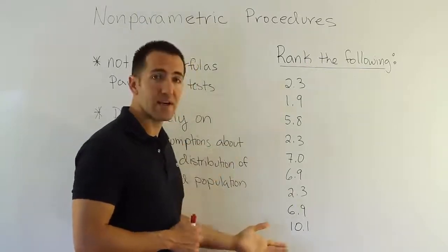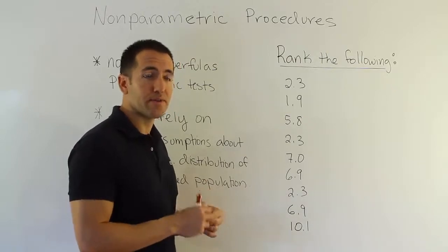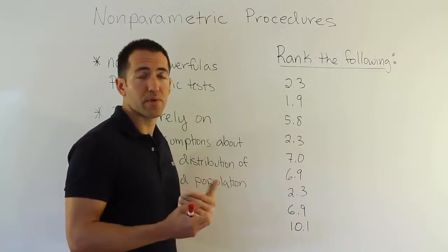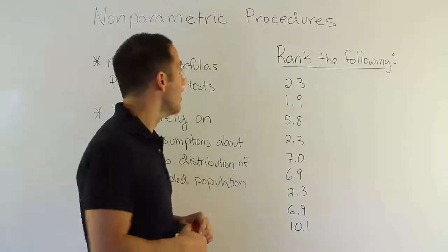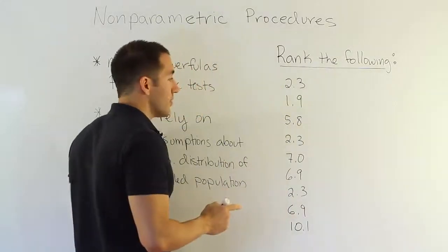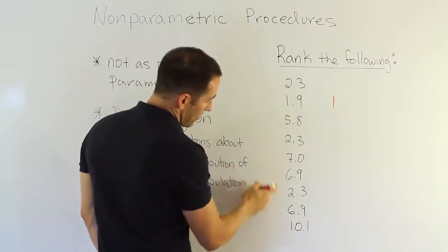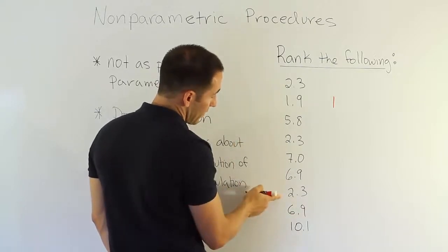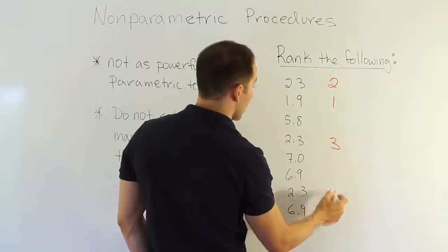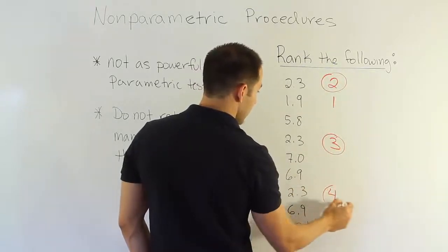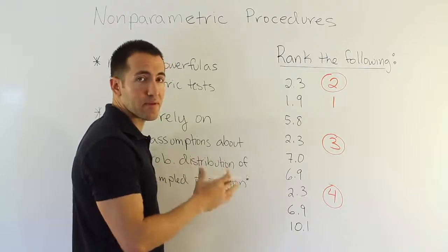Let's do this problem. Initially go through the data and rank it, putting the smallest number as one, the next as two. If you run across ties, just assign sequential ranks for now — if two numbers are tied and would normally occupy positions three and four, just put three and four, and we'll go back and fix the ties after. So let's start: the smallest number is 1.9, so that gets rank one. The next smallest would be something in the twos — I see a 2.3, but there are multiple 2.3s. Let's call the first one two, the next three, and the next four. I'm going to circle these numbers to indicate they aren't the final ranks because there's a tie.